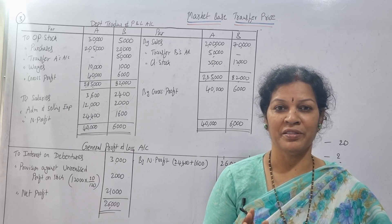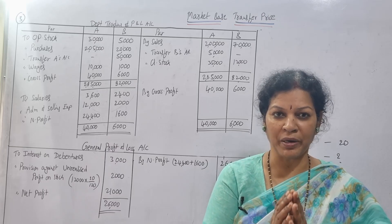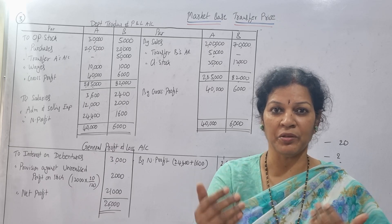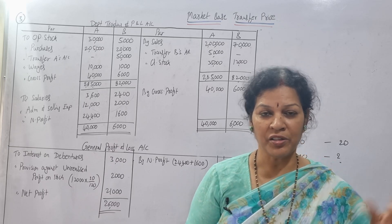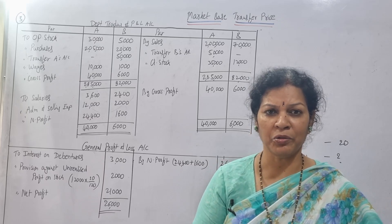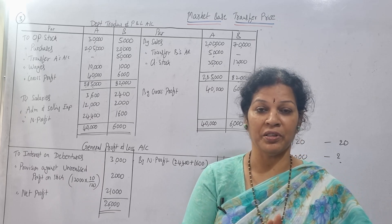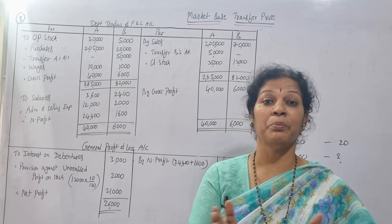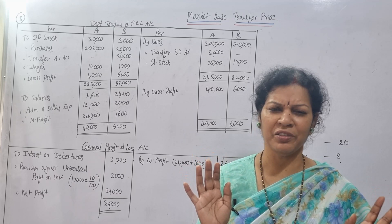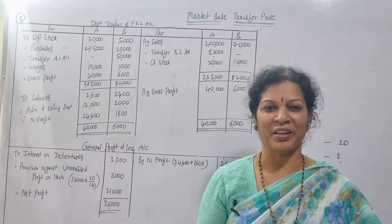Today we will see market-based transfer. Market-based means as per the market, what is the price? Maybe 10%, 20% something got increased. If cost is 1 lakh, now market price may be 1 lakh 10,000 or 1 lakh 20,000, whatever it may be. So that market-based transfer we will see today. One simple problem we will work out — very easy to understand. With this we are going to finish departmental account.